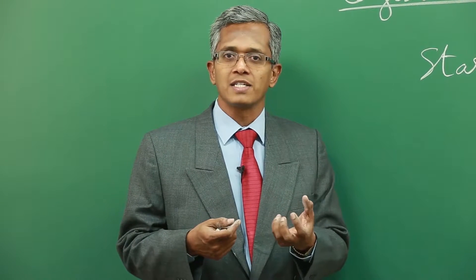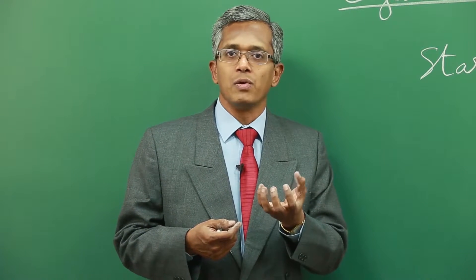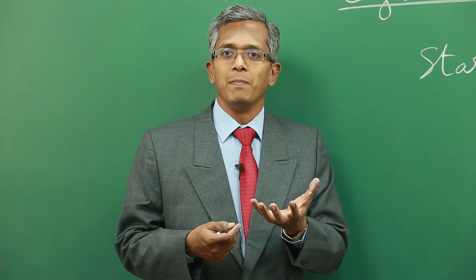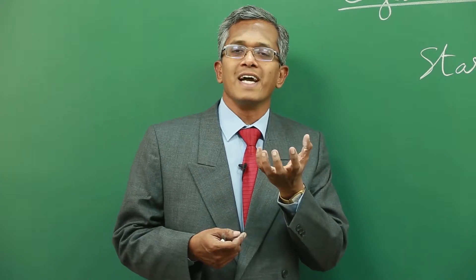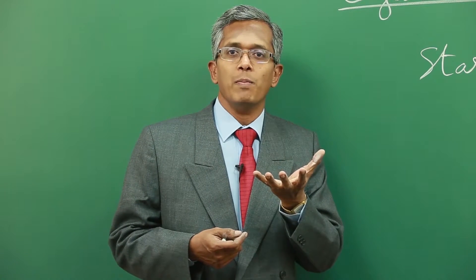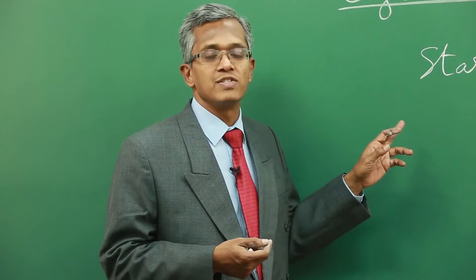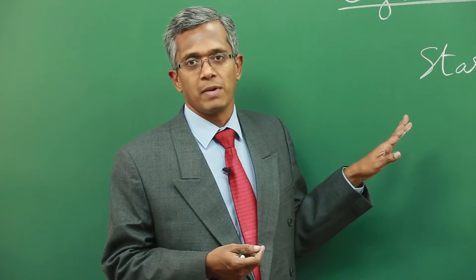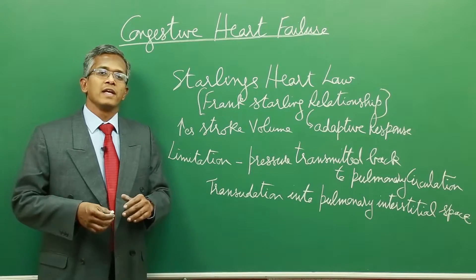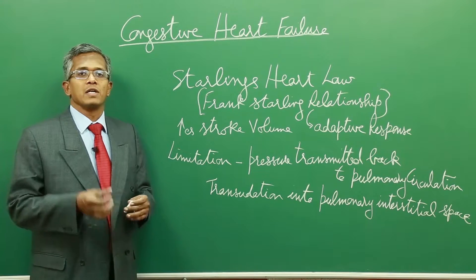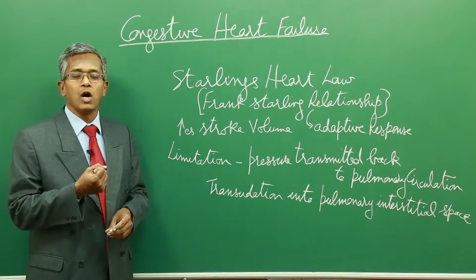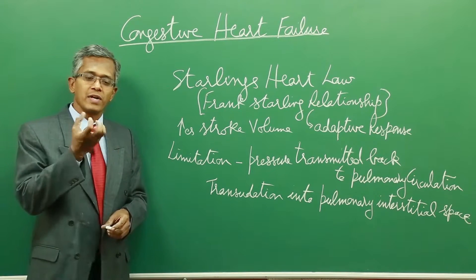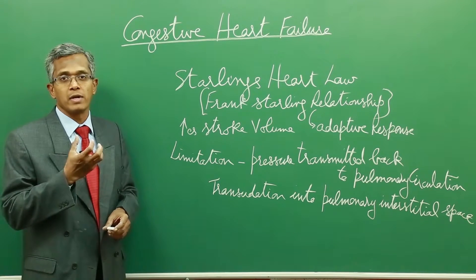As a compensatory mechanism, the heart increases the preload and tries to make up for it by the Frank-Starling relationship. When there is full diastole, it tries to give more force of contraction. The force of contraction is directly proportional to myocardial fiber length. In congestive heart failure, this Frank-Starling relationship applies: with increased preload, the greater fiber length leads to increased force of contraction.